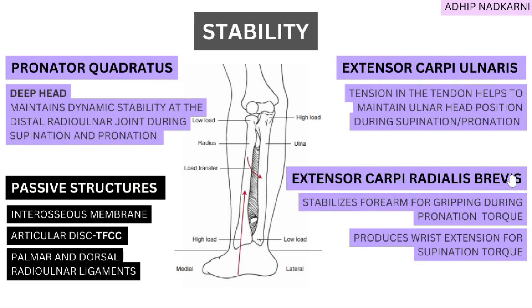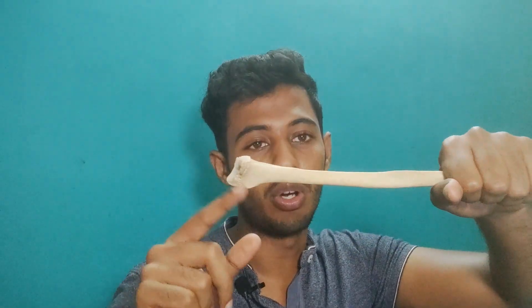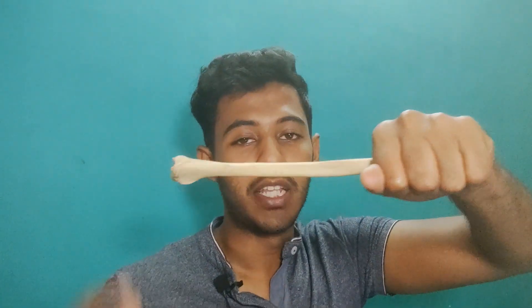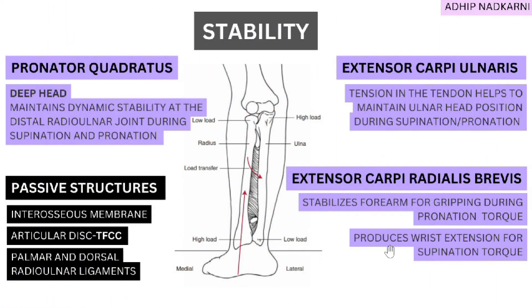Finally, the extensor carpi radialis brevis is on the radial side, and its main function is to stabilize the forearm during gripping and also during pronation torque. For example, if you are gripping a heavy object pulling you into pronation, the extensor muscles — including extensor carpi radialis brevis — create extension and supination to fight that pronation torque. It also produces wrist extension for the supination torque. With that, we finish this topic; the next video will cover passive structures and their role in radioulnar joint stability.